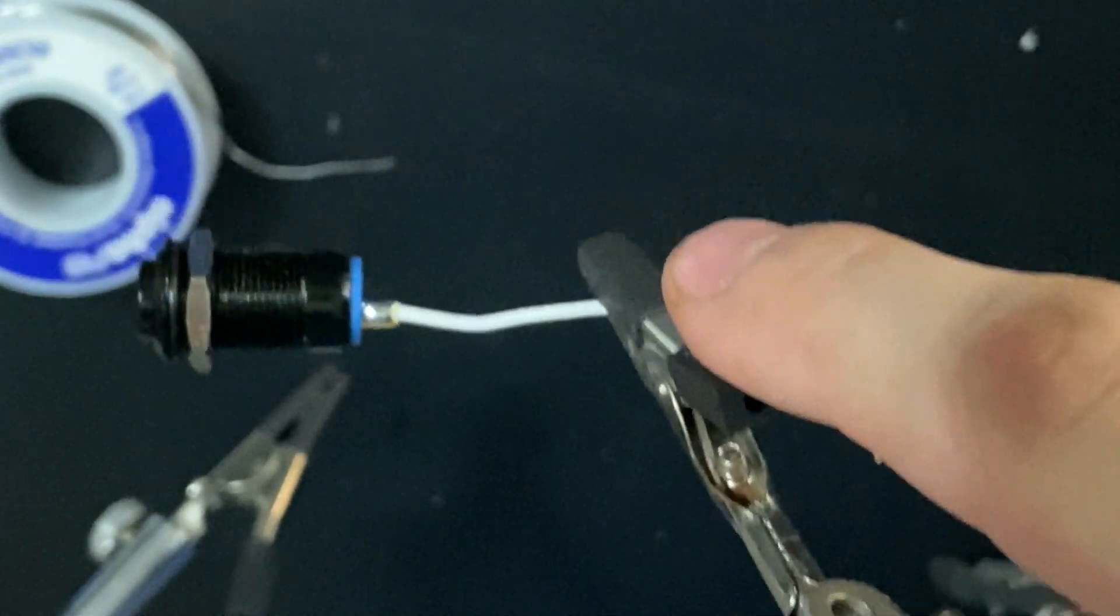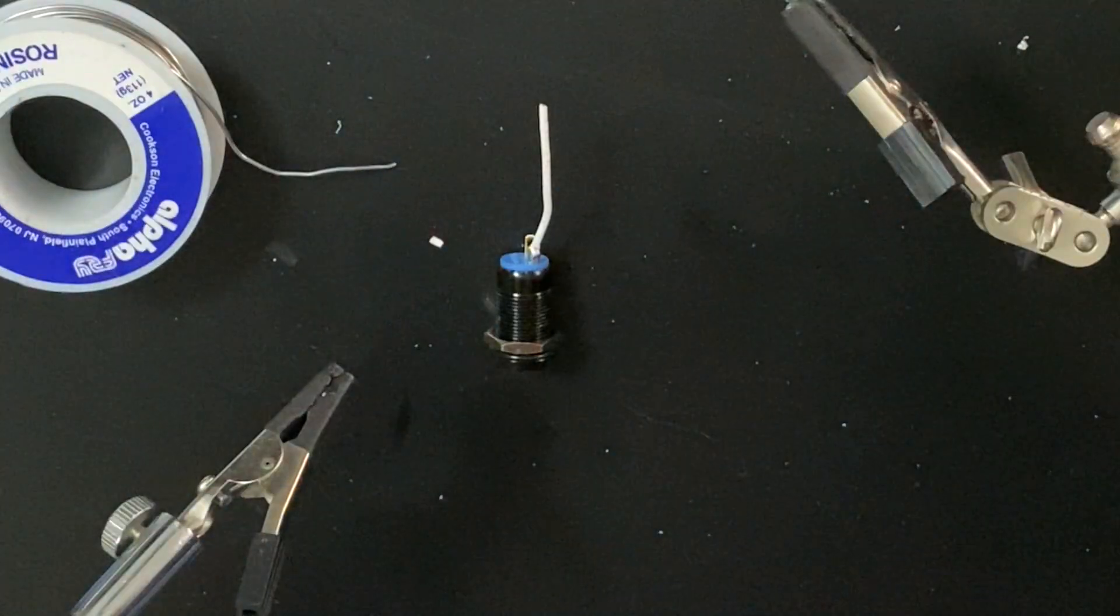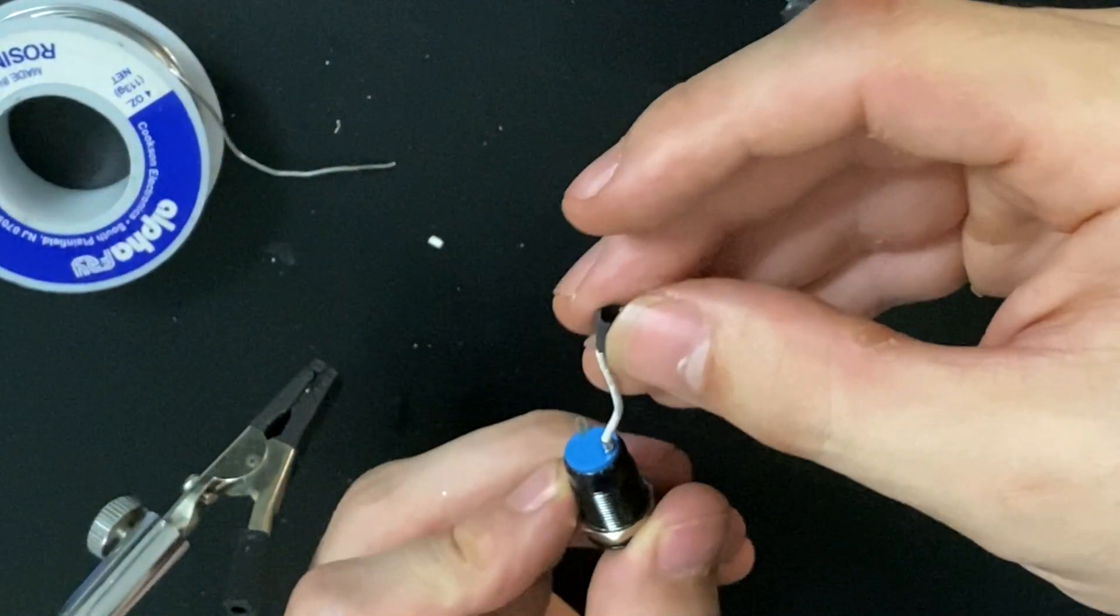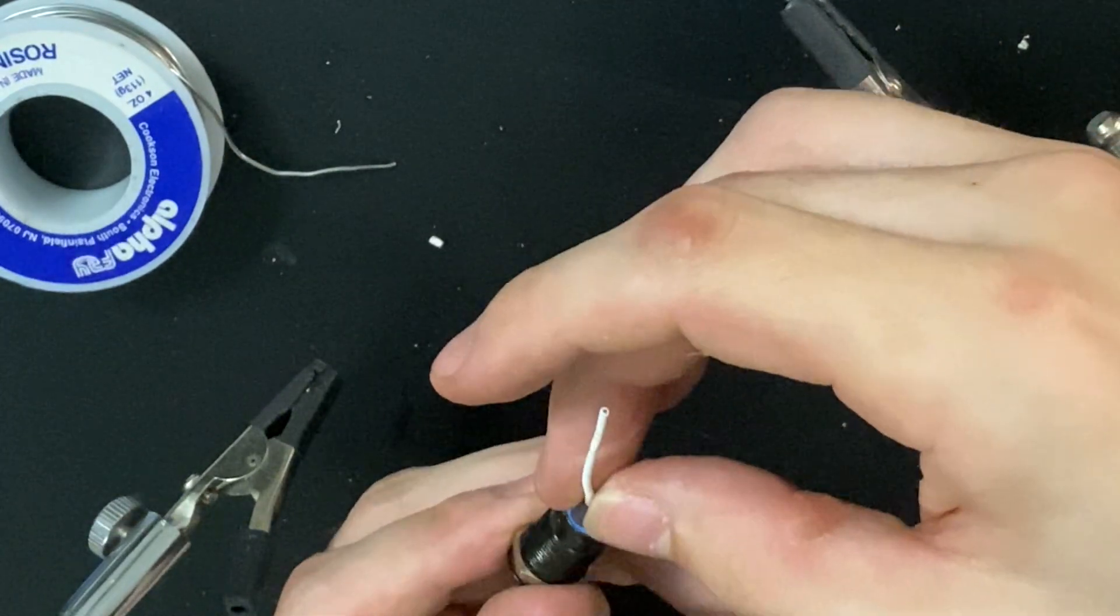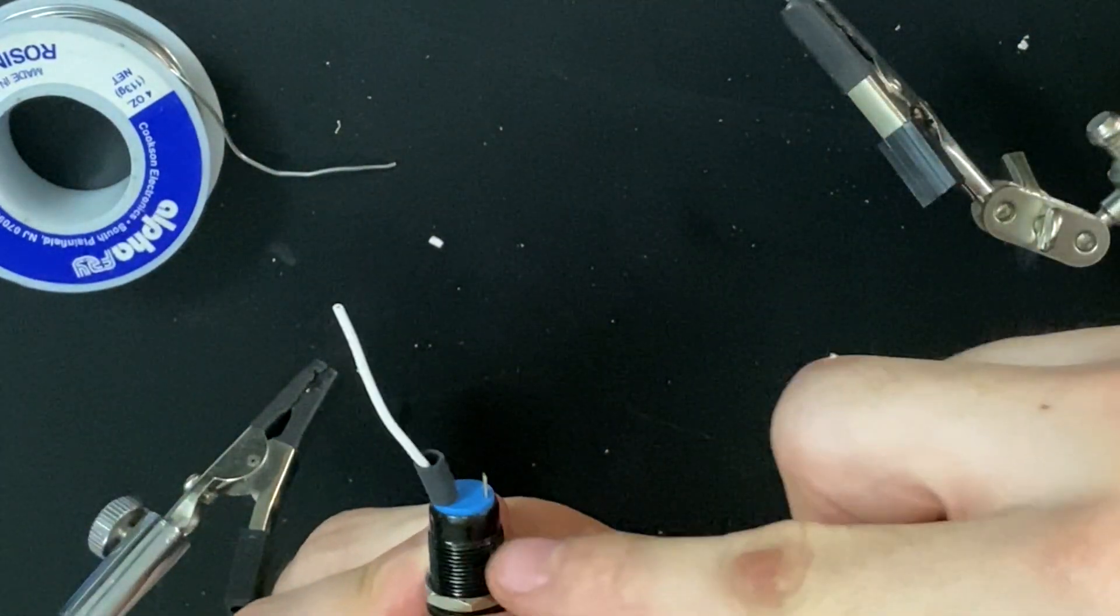And same thing with the resistor, you're going to want to chop a little piece of heat shrink and slide it over the wire to cover your switch tab.